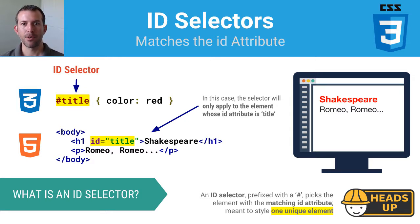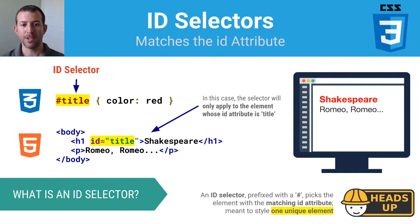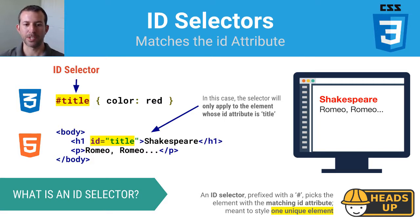To use an ID selector, you add an ID attribute to the element's opening tag, and then you create a CSS rule prefixed with a pound sign followed by the name of the ID. That is how you can target individual things on the page for styling.